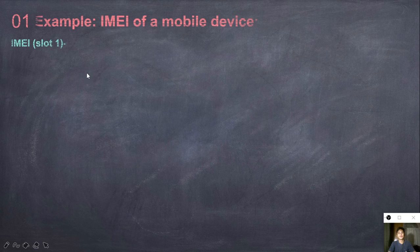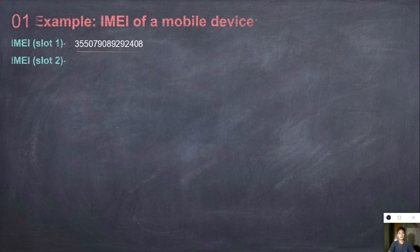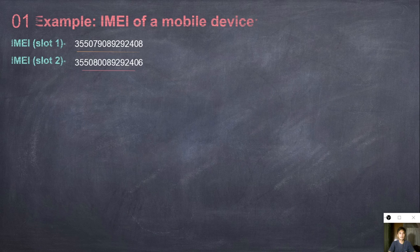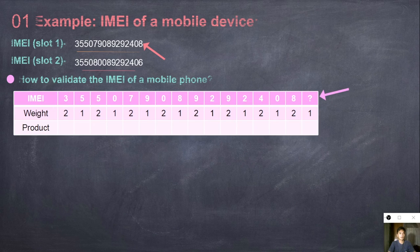Let's go to the first example. First slot of IMEI, which is 355079089292408. The second slot is 355080089292406. So, how to validate the IMEI of a mobile phone? Let's start with the first slot of IMEI. The first row shows the digits of IMEI. And the second row is the weight value, which is 2121. You can use the 2121 sequence on the IMEI or on credit cards.